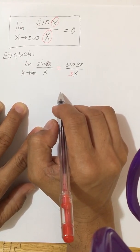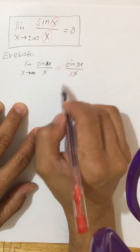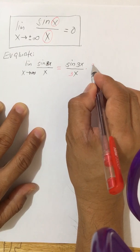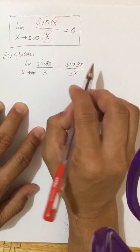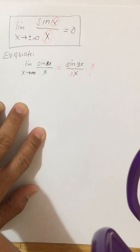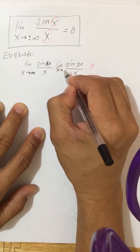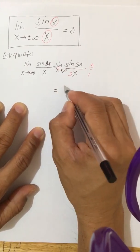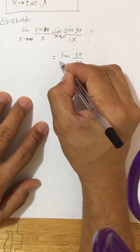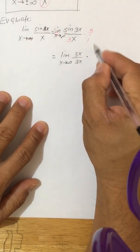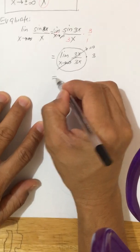If you multiply the denominator by 3, you are changing the function, so to avoid that we also have to multiply the numerator by 3. In that case, we are not changing the function. We can now use this concept and take the limit. The limit of sine 3x over 3x as x approaches infinity is 0, multiplied by 3, so the answer is equal to 0.